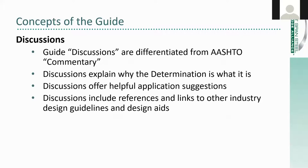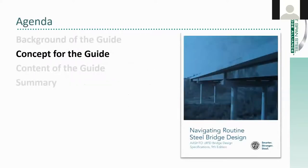In addition to an applicability determination for each article, the guide also provides a discussion. The discussions first explain the why of the applicability determination, and then as appropriate, they provide some helpful tips or suggestions for how to implement a given AASHTO provision. The discussions also include lots of references and hyperlinks to various industry design guidelines and design aids. So that's the basic concept — let's show you next what that concept looks like.